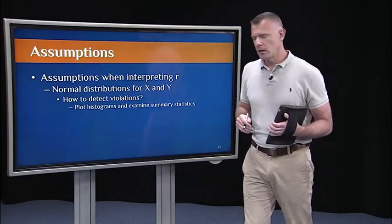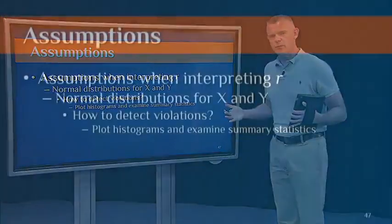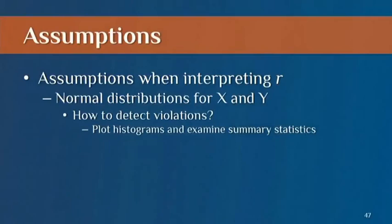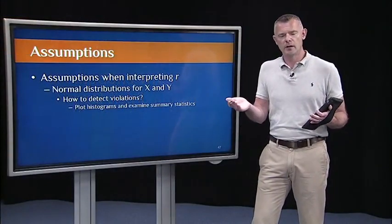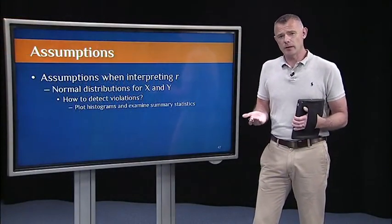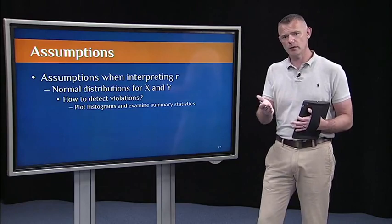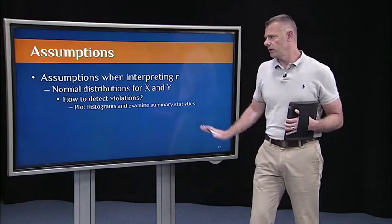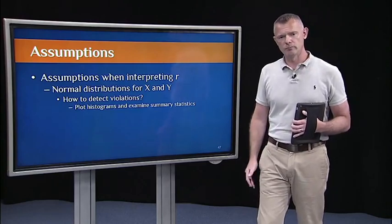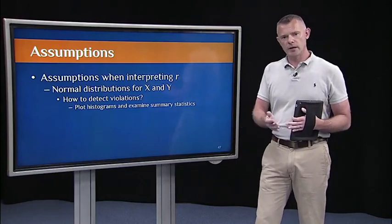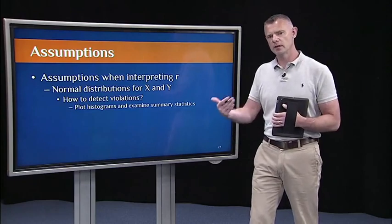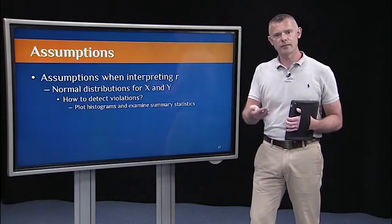So let's go back to the first three. Number one: normal distributions for X and Y. How do we detect violations of that assumption? That's easy — just go back to our lecture on distributions and summary statistics. All you have to do is plot histograms, eyeball them, see if they're relatively normal. If it's hard to detect, you could run summary statistics and see if they're normal enough to satisfy this assumption.